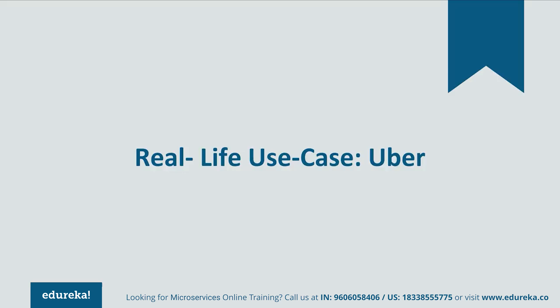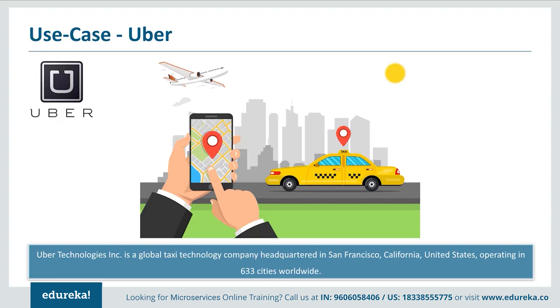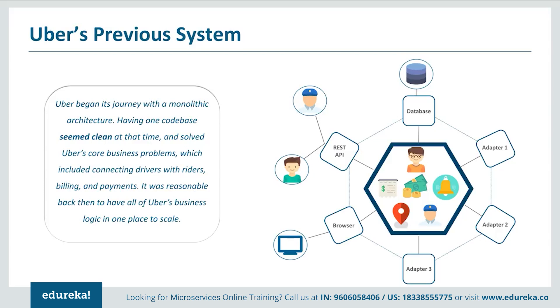Let's look at a real-life use case of Uber. Uber Technologies is a global taxi technology company headquartered in San Francisco, United States, operating in 633 cities worldwide. Like many other startups, Uber also started its journey with a monolithic architecture for a single city. Initially, they had a REST API connecting passengers and drivers — the mobile API was connected to the REST API which was then connected to the monolithic architecture as a backend server. For people accessing through web UI, they were also connected to the same server. There were also three adapters for notifications, sending mails or messages, billing, and payment. Finally, a MySQL database captured all their data.